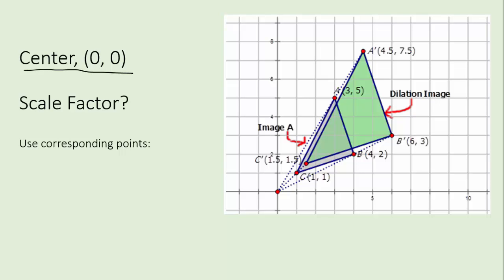So if the center's at zero zero here's what you can do. Find two corresponding points like I like the numbers at B and B prime. See these two? Look how easy this is. Basically you either take the X's or the Y's. It doesn't matter.